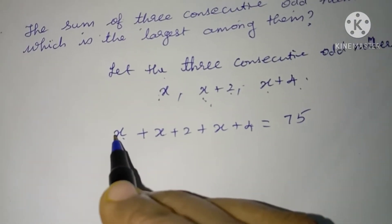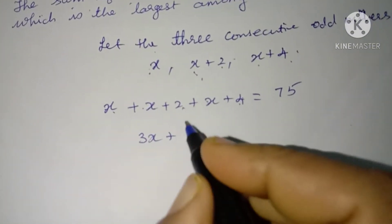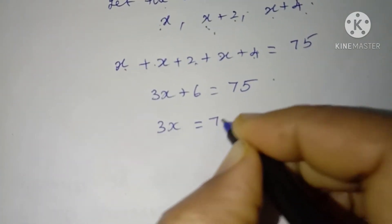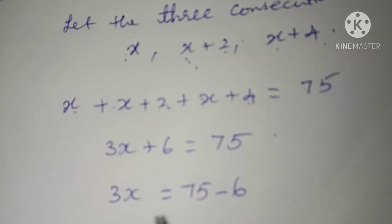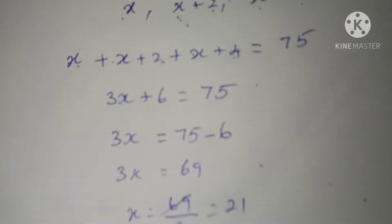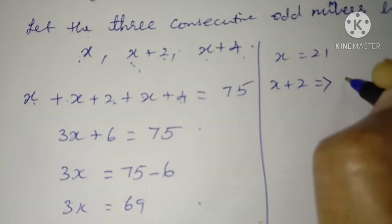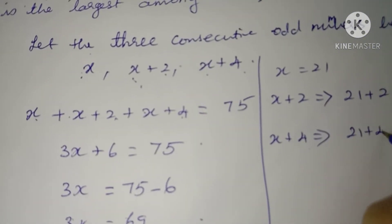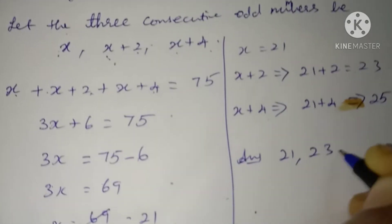Add all the x terms: 1 plus 1 plus 1 is 3. So 3x plus 2 plus 4 is 6, equals 75. Keep the x value and bring 6 to the right hand side: 75 minus 6 is equal to 69. Therefore, x is equal to 69 divided by 3, which is 21. If x is 21, then x plus 2 equals 21 plus 2 equals 23, and x plus 4 equals 21 plus 4 equals 25. Therefore, your answer is 21, 23, and 25.